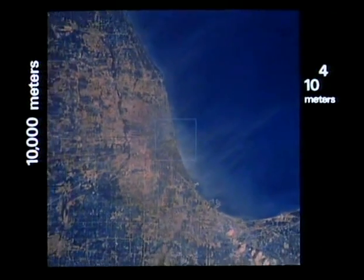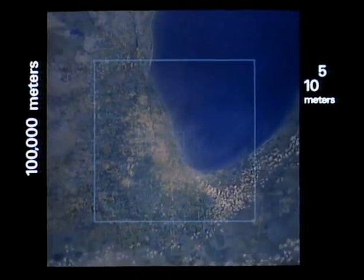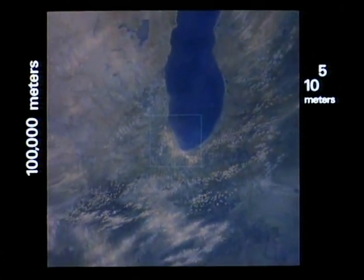First, the rounded end of Lake Michigan, then the whole Great Lake, 10 to the 5th meters, the distance an orbiting satellite covers in 10 seconds. Long parades of clouds, the day's weather in the Middle West.